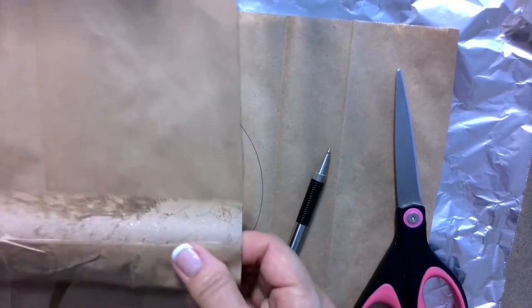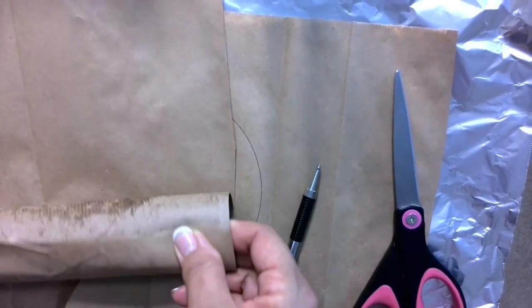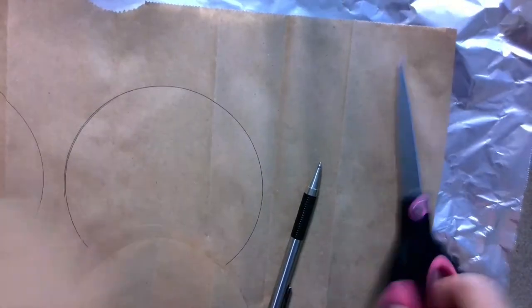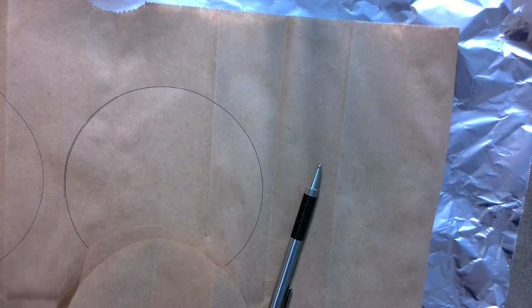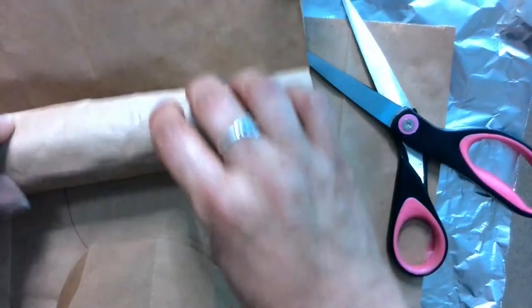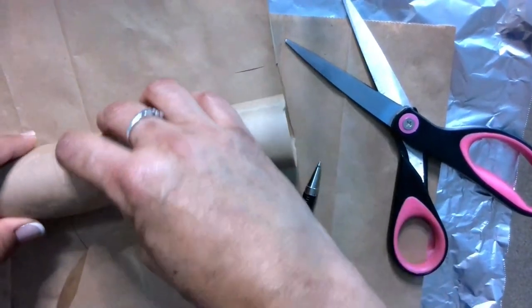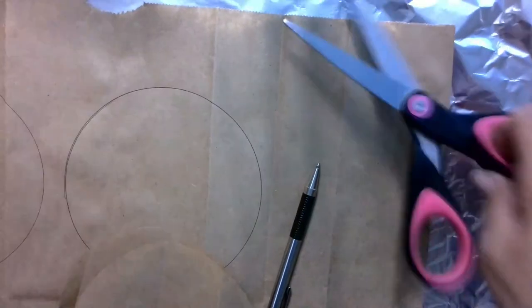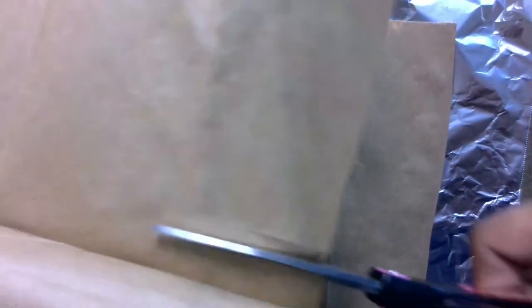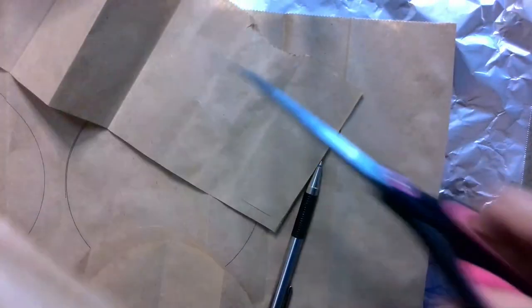You're going to glue that piece of paper to your paper towel roll, but before you do that, measure and cut. Just give it a little overlap. Measure to make sure it covers the whole thing and give it a little overlap.